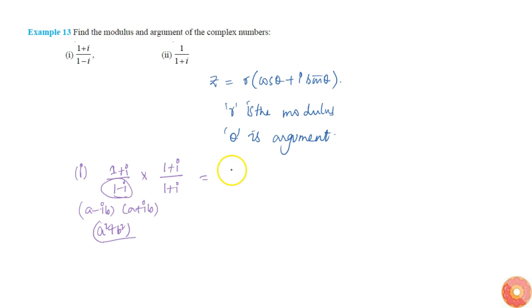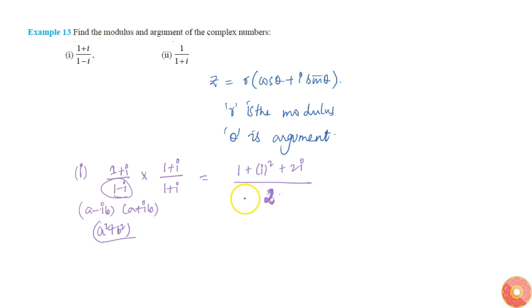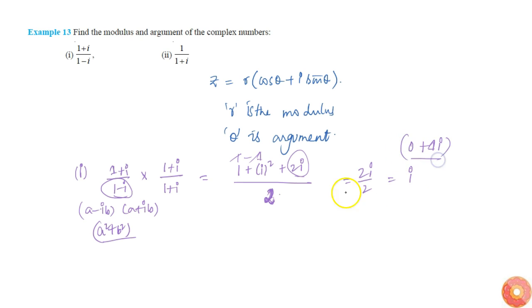The numerator is (1 plus i) all squared, which is 1 squared plus i squared plus 2i. In the denominator, a squared plus b squared is simply 2. The numerator becomes 1 minus 1, so they cancel out, leaving 2i over 2, which equals i. Therefore z equals 0 plus 1i.